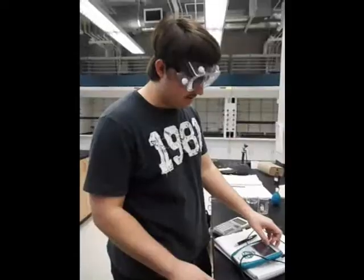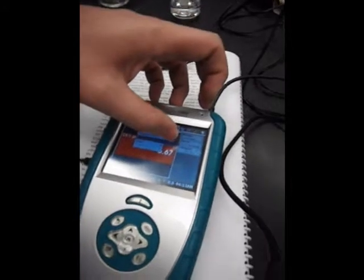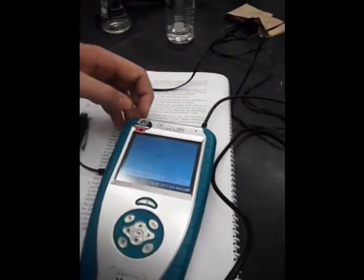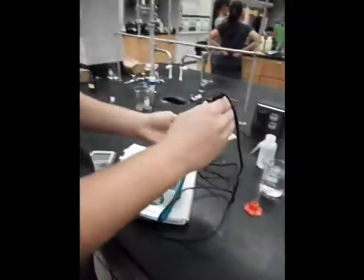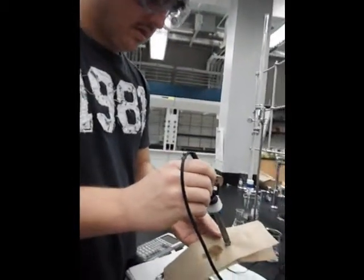Today we are going to do pH calibration. First you need to remove the pH meter from the distilled water. Whenever you're drying it, dab it lightly so you don't hurt the electrode.